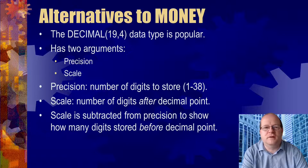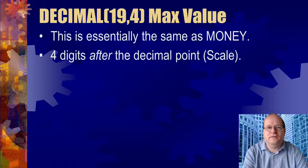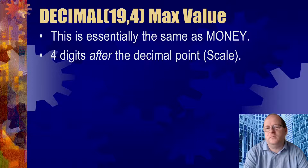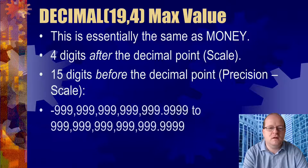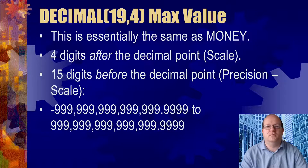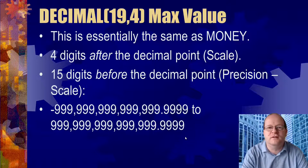Decimal(19,4) is the most commonly used alternative because it's very similar to the money field. It has 4 digits after the decimal point (the scale), and 15 digits before the decimal point — that's precision minus scale: 19 minus 4 equals 15. So with decimal(19,4) you can store 15 digits before and 4 digits after the decimal point.